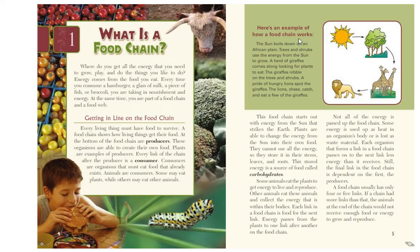Here's an example of how a food chain works. The sun beats down on the African plain. Trees and shrubs use the energy from the sun to grow. A herd of giraffes comes along looking for plants to eat — the giraffes nibble on the trees and shrubs. Then a pride of hungry lions spot the giraffes. The lions chase, catch, and eat a few of the giraffes, gaining that energy for themselves.